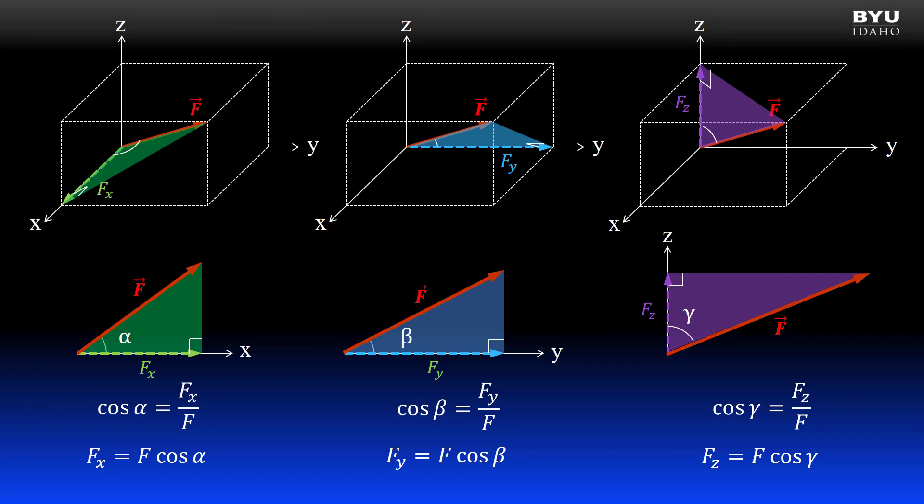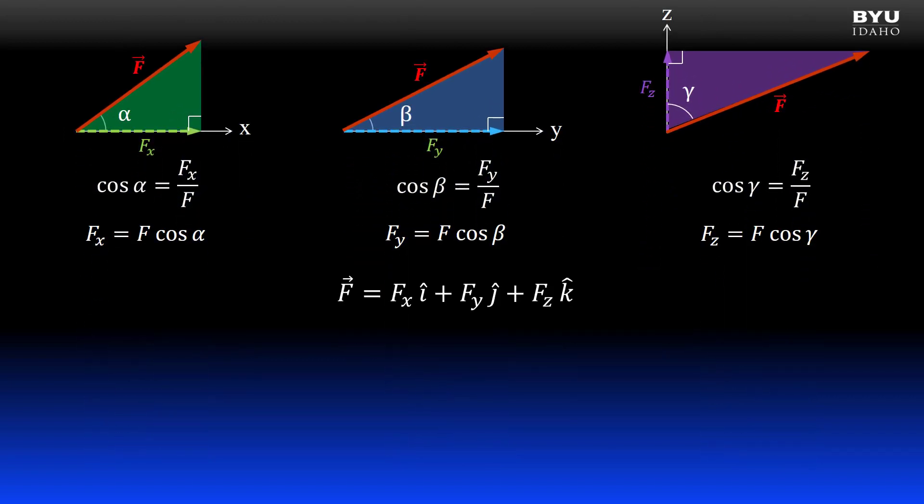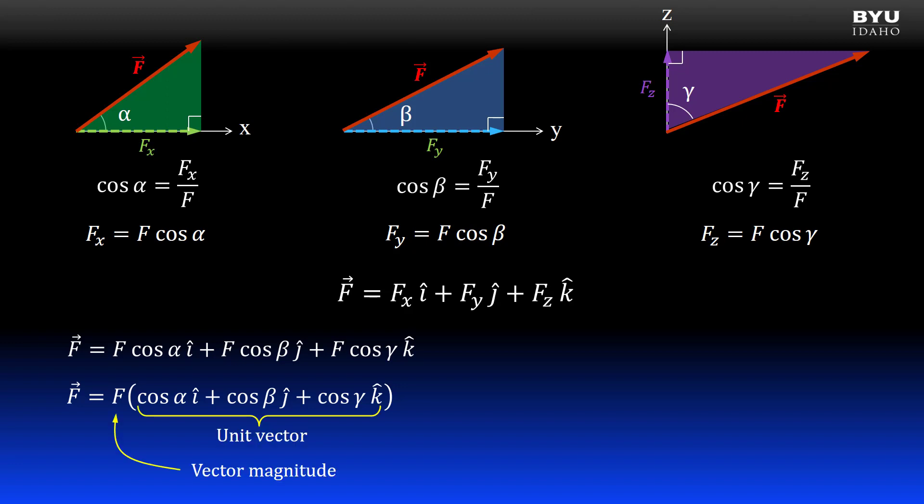Sometimes we call alpha, beta, and gamma direction cosines because of these relationships. Here is the general form of a vector using Cartesian notation. We can substitute in these force components. That gives us a vector in terms of the three direction angles. I can pull the magnitude f to the front of the equation. Now I have a notation in terms of the vector magnitude and a unit vector.